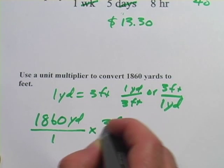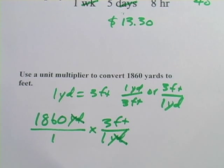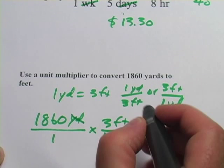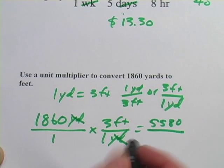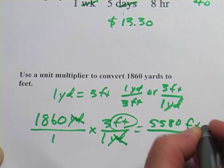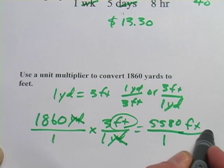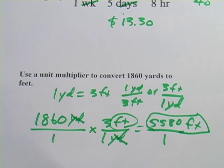So three feet, one yard, the yards will cancel. Now we'll do the math, 1,860 times three across the top, that's 5,580. And then one times one on the bottom, and we're ending up with feet as our unit. So that's 5,580 feet is our answer. So those are some problems using unit multipliers.